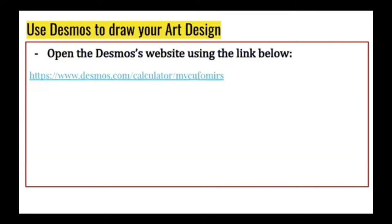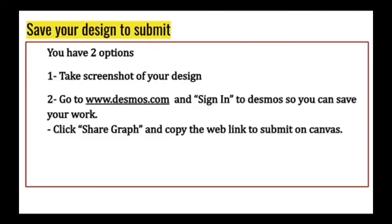Step three: Use Desmos to draw your art design. Open the Desmos website using the link www.desmos.com. Step four: Save your design to submit. You have two options — either take a screenshot of your design, or go to www.desmos.com and sign in to save your work. Then click Share Graph and copy the web link to submit on Canvas.